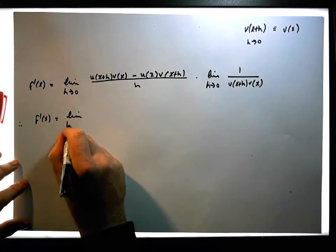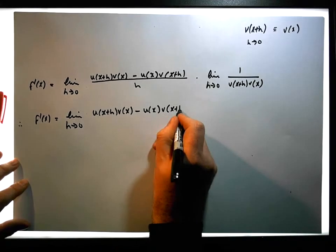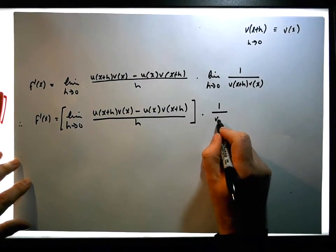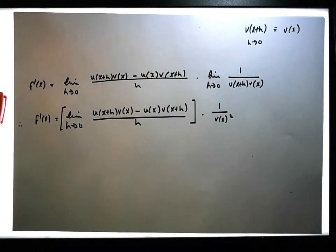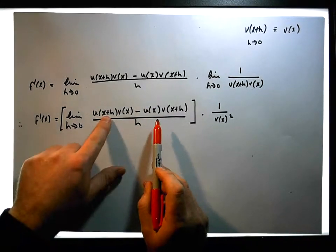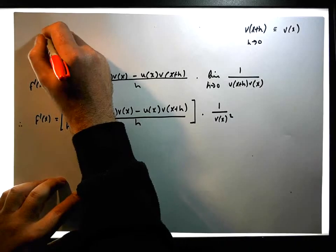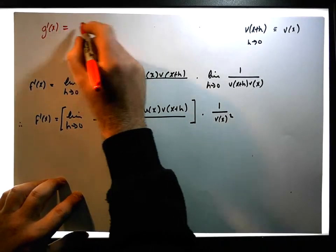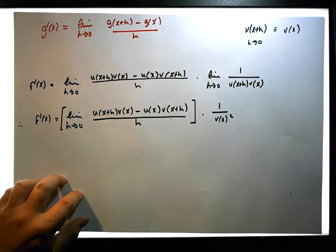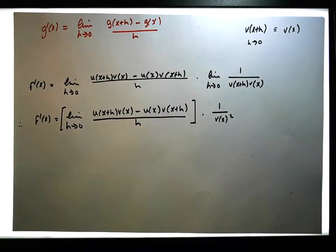So f prime of x is equal to the limit as h tends to zero of u(x+h) times v(x) minus u(x) times v(x+h), all divided by h, times one over v(x) squared. Now, to calculate the derivative from first principles, recall that the derivative of any function g(x) is simply equal to the limit as h tends to zero of g(x+h) minus g(x), all over h. We'd like to do a little bit of work on this numerator to see if we can break it into something that looks like g(x+h) minus g(x).